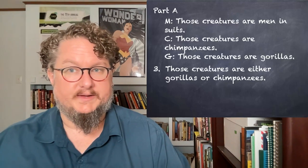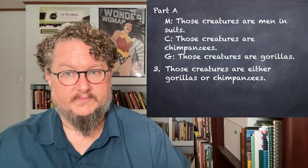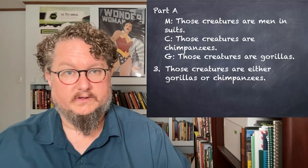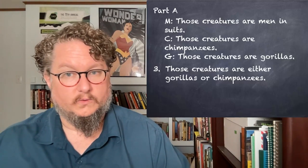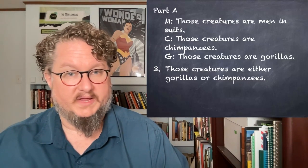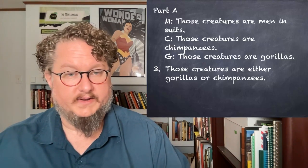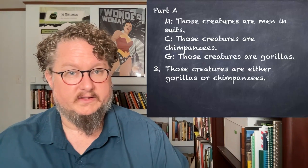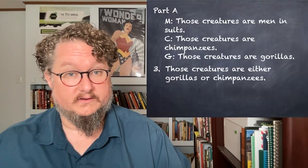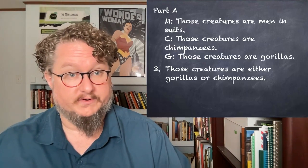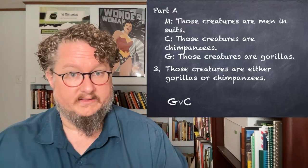Let's look at number three. The 'either...or' here is equivalent to 'those creatures are gorillas or those creatures are chimpanzees.' It doesn't look like two sentences — you just have two nouns, 'gorillas or chimpanzees' — but we have to expand it out into 'those creatures are gorillas or those creatures are chimpanzees.' Then we can translate it in this way.